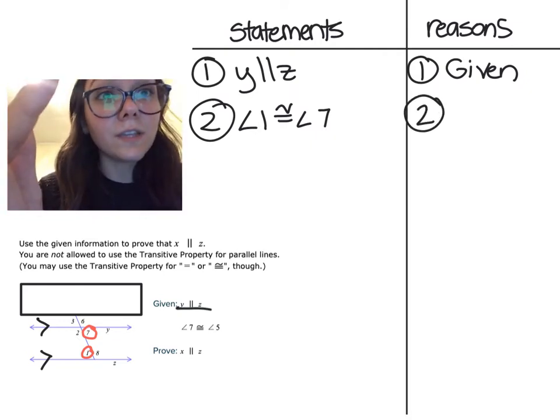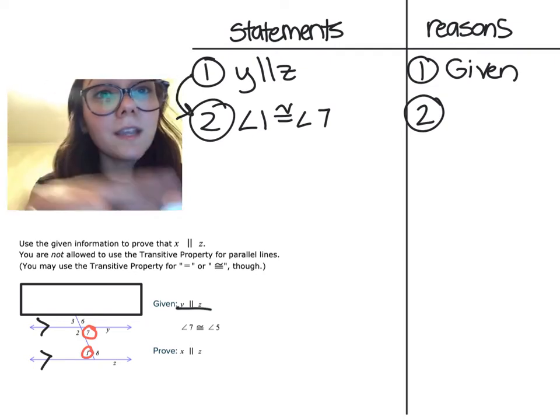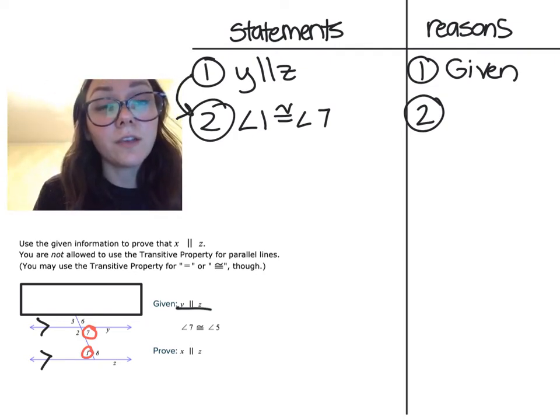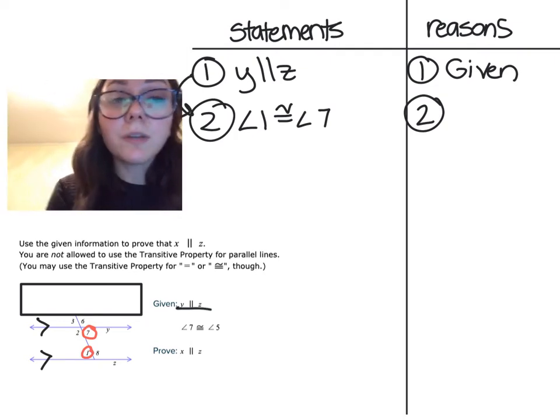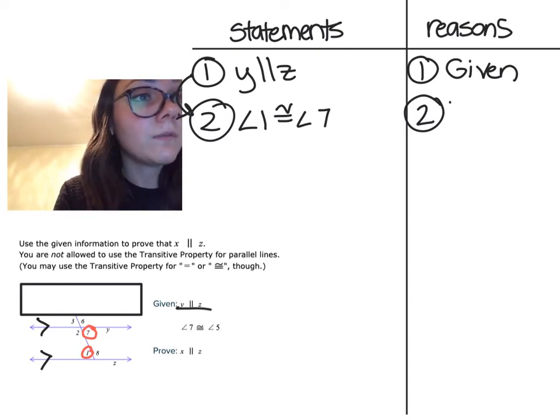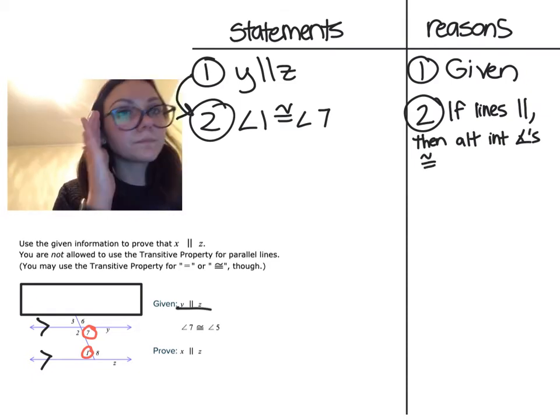And I know that if my lines are parallel, which is what was given, then I can say alternate interior angles are congruent. So that's what I'm going to write for my reason, which is the alternate interior angles theorem. If lines parallel, then alternate interior angles are congruent.